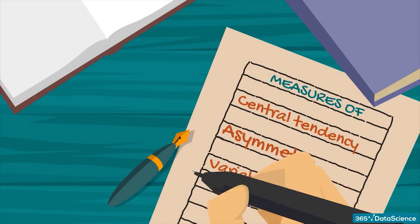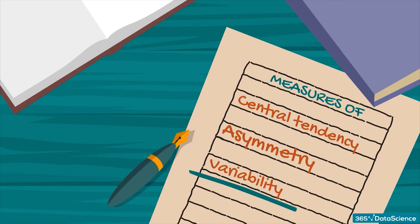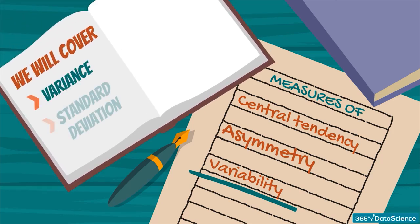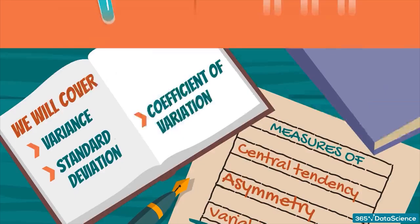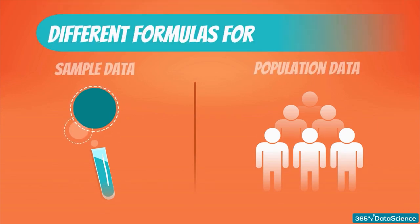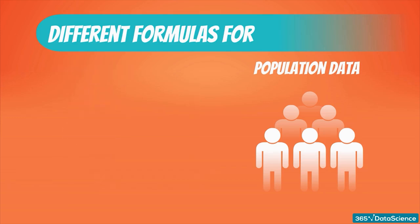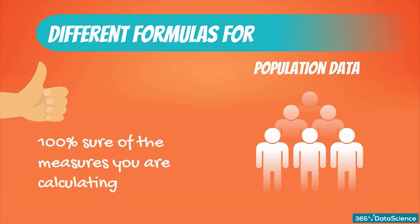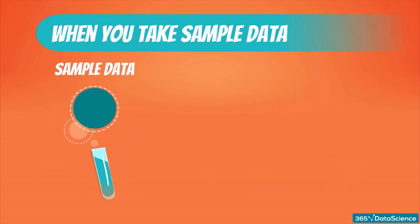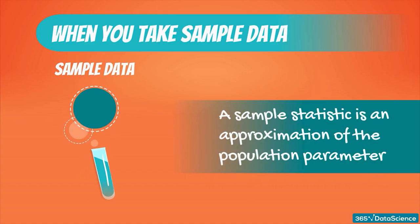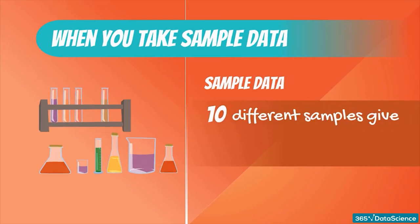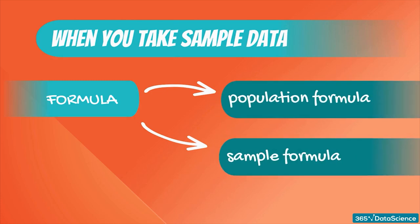Next on our to-do list are the measures of variability: variance, standard deviation, and coefficient of variation. In statistics, we typically use different formulas when working with population data and sample data. When you have the whole population, each data point is known, so you are 100% sure of the measures you are calculating. When you take a sample, the sample statistic is interpreted as an approximation of the population parameter. Moreover, if you extract 10 different samples from the same population, you will get 10 different measures. Statisticians have adjusted the algebraic formulas to reflect this issue.